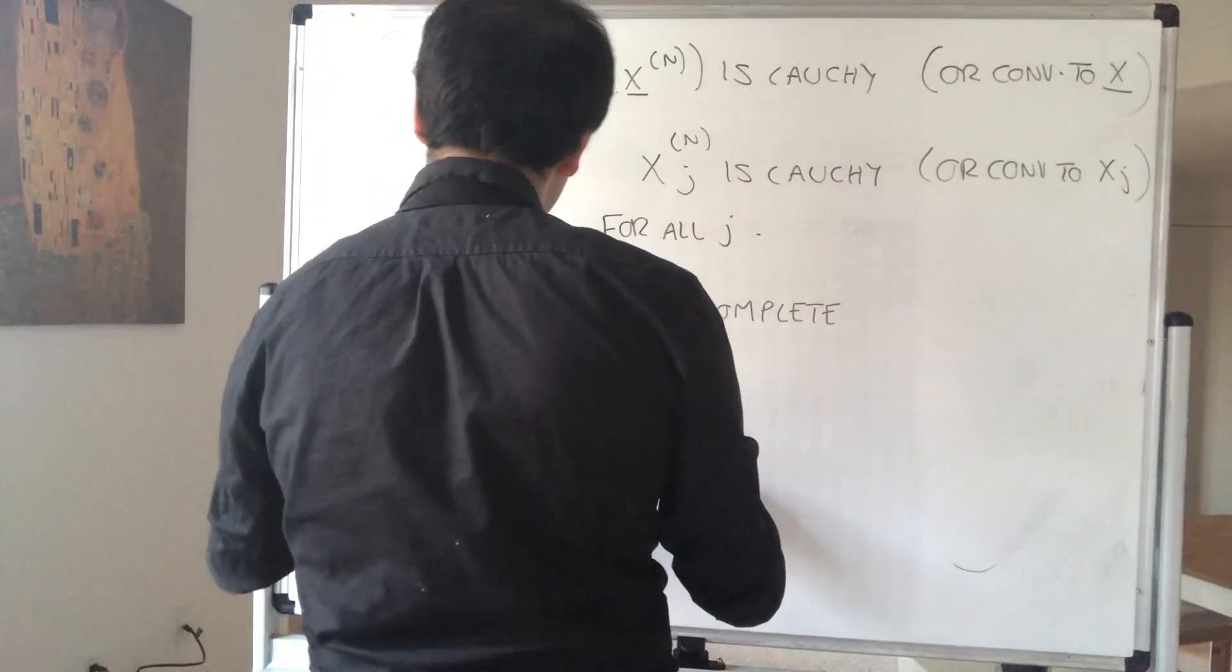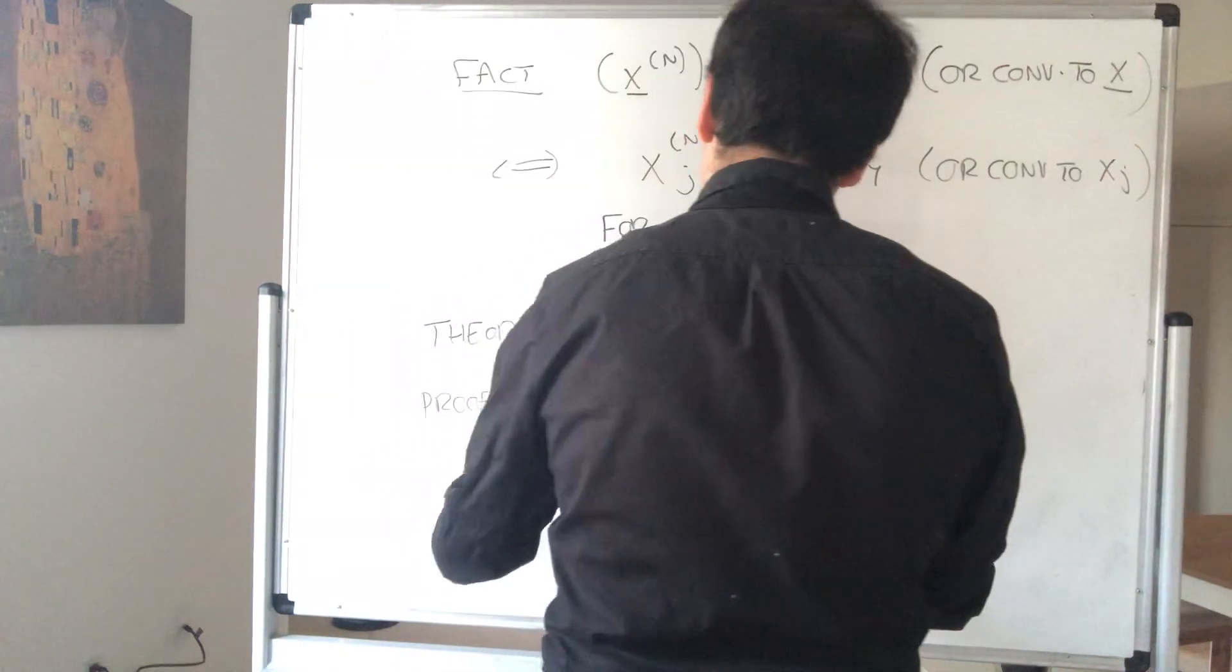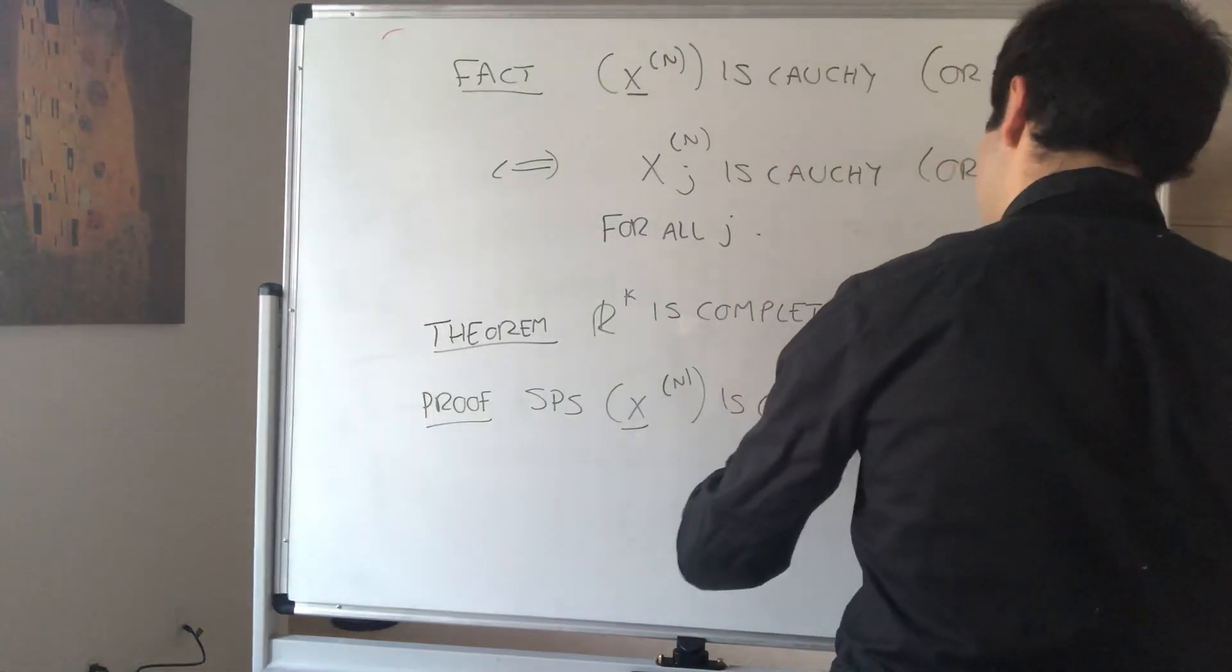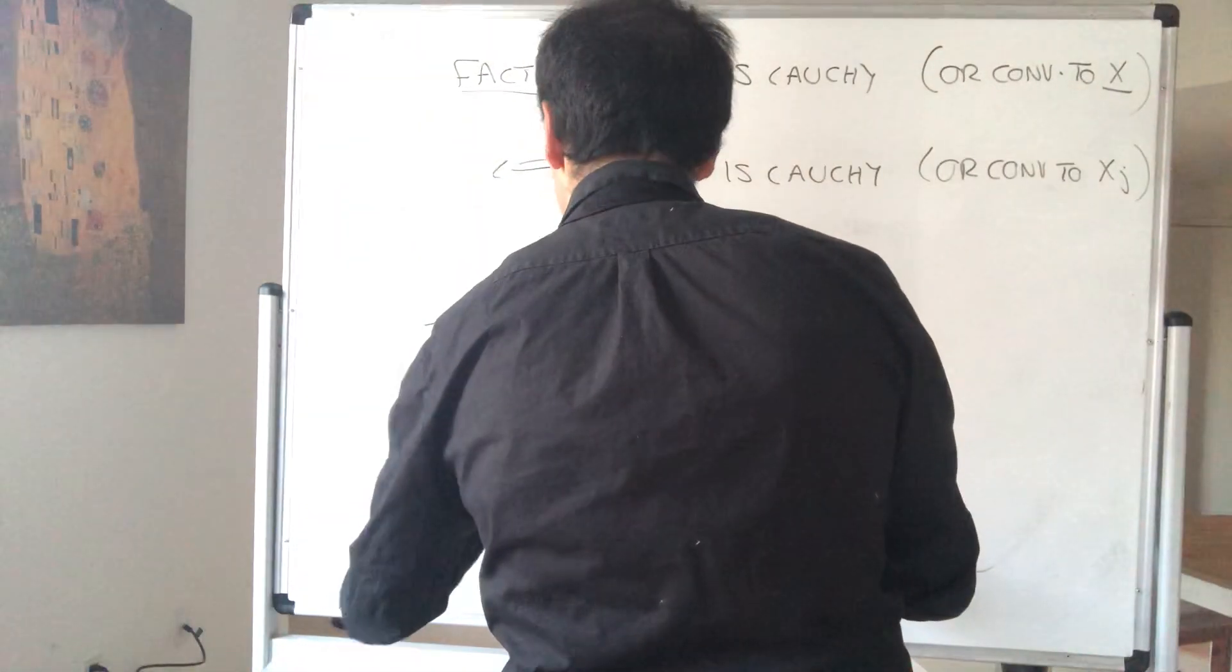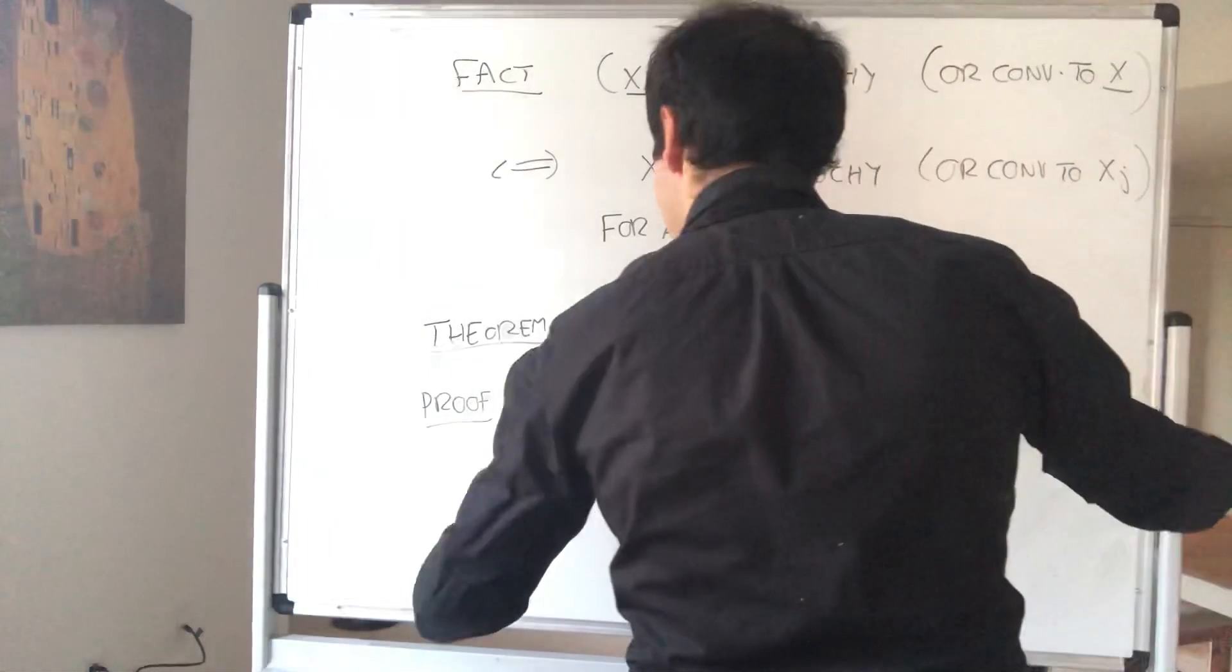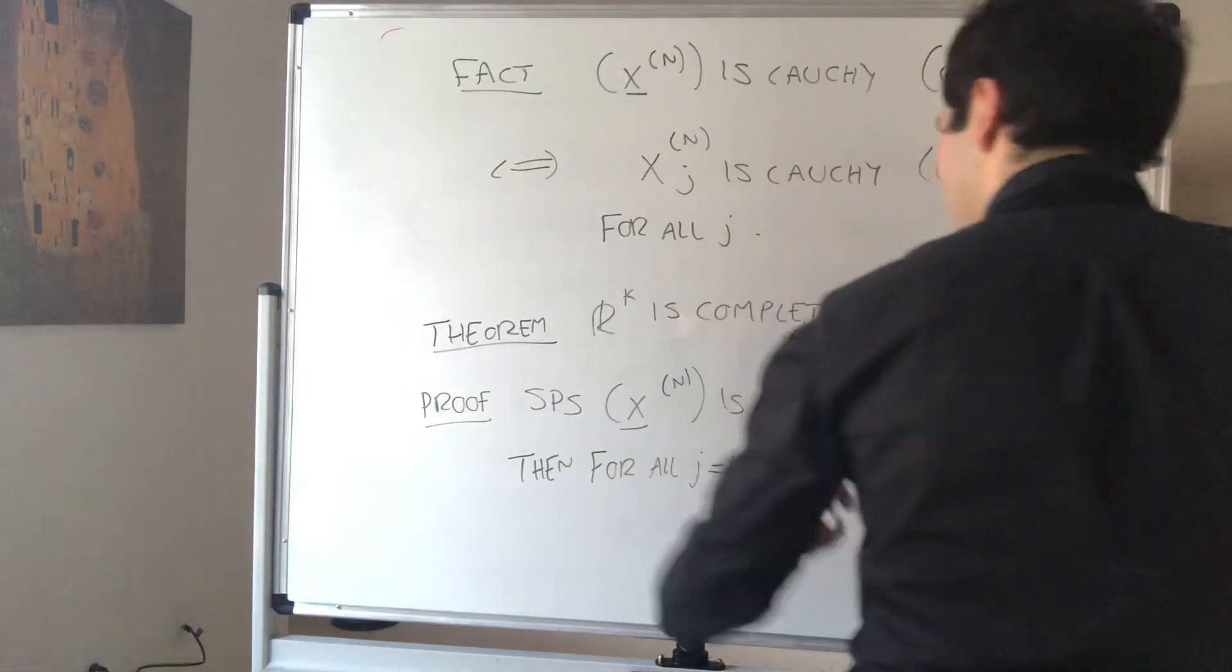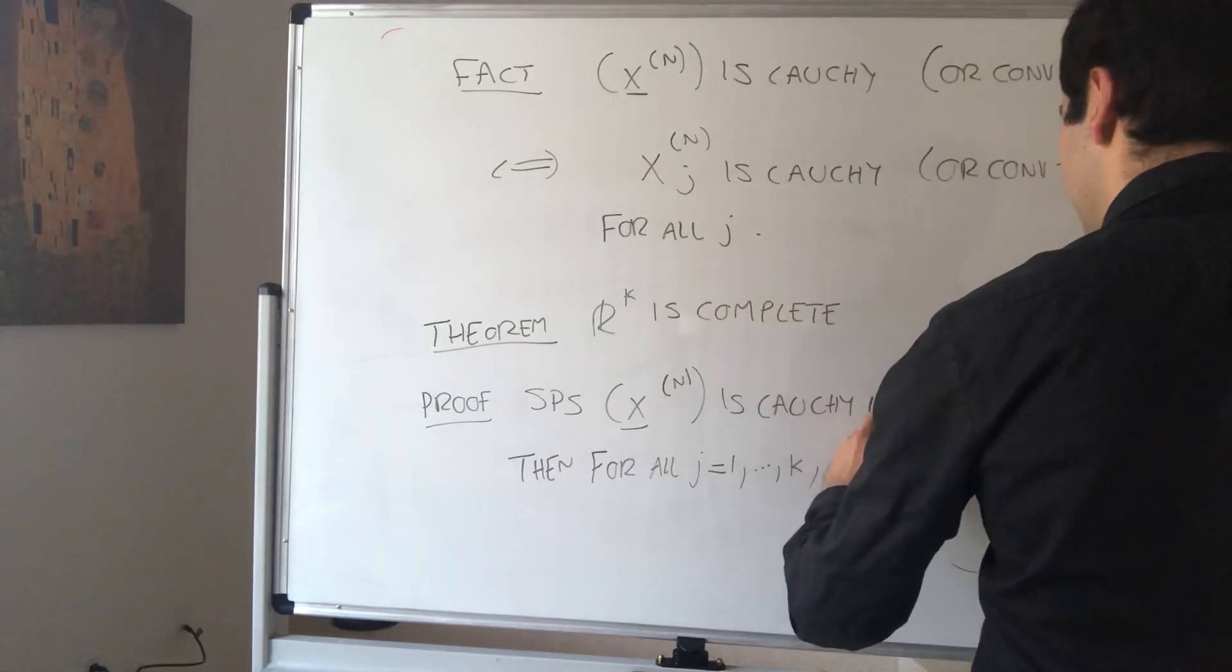Proof. Suppose, okay super quick proof actually. Suppose X_n is Cauchy in R^K. Then, I'm going to write that in R^K. Then for all j from 1 to K, X_n^j is Cauchy.